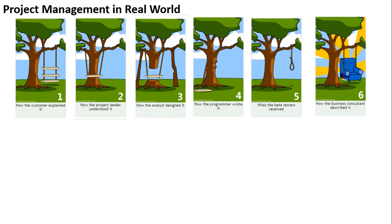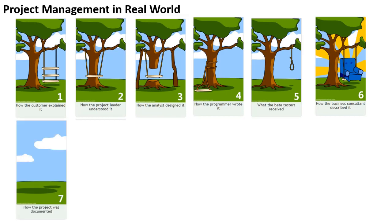And how the business consultant described it — consultants, with their good command of flowery language, said you want a sofa on a swing with a sunrise behind it. That will look beautiful. And as for how the project was documented: if you have worked on projects, you know documentation is most often very poor unless you have a fixed timeline for it and a team that is very good at it. Documentation always suffers.